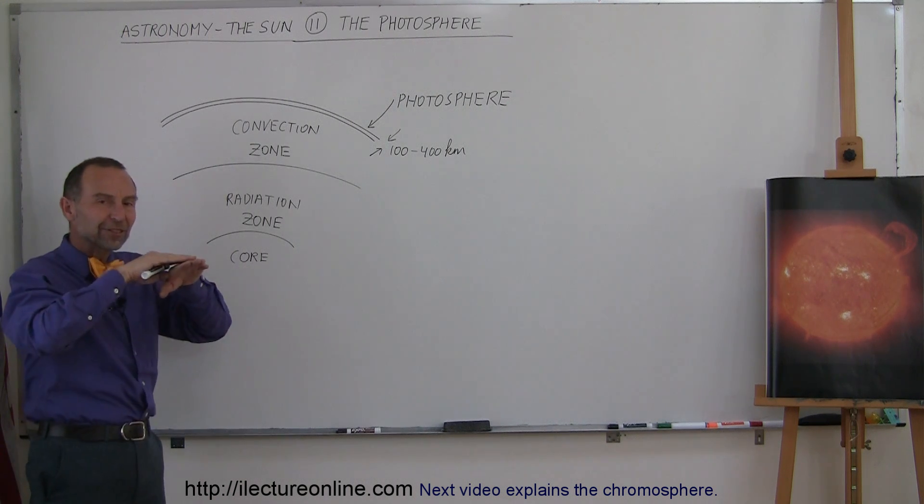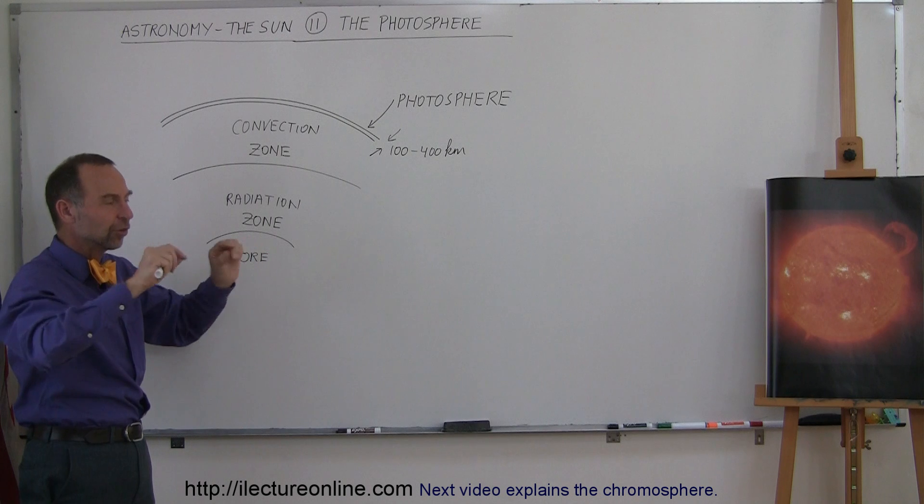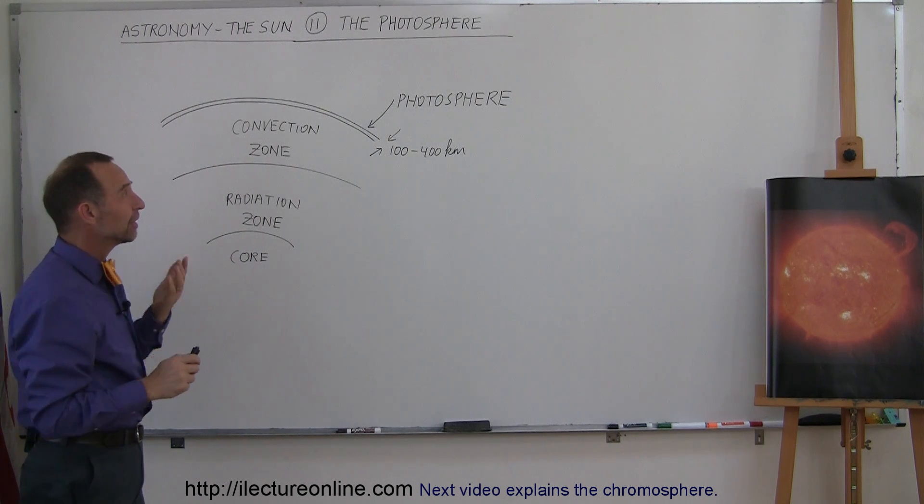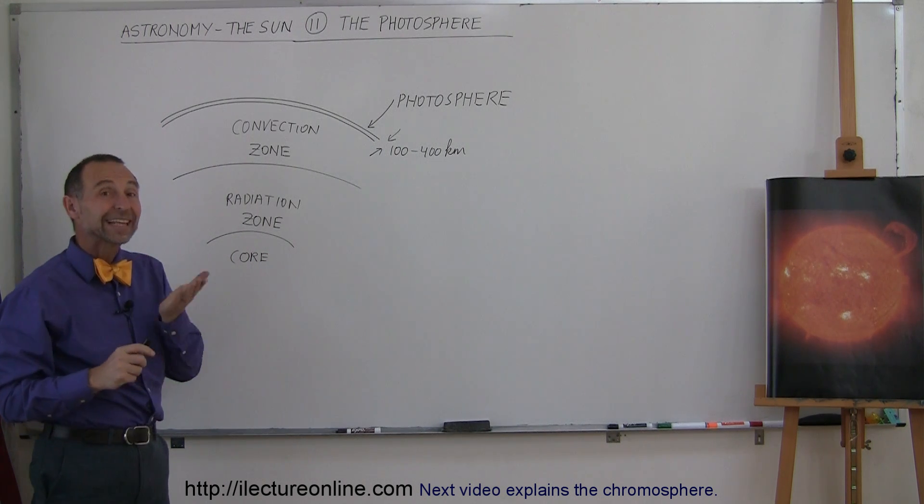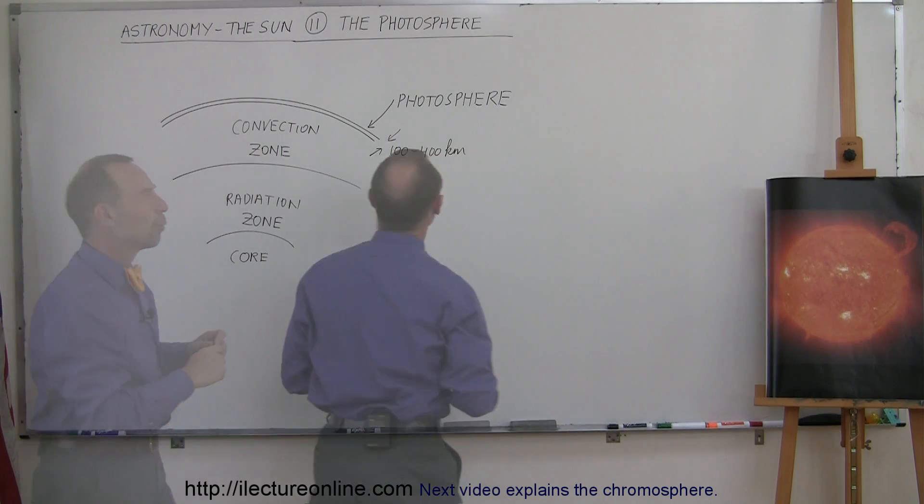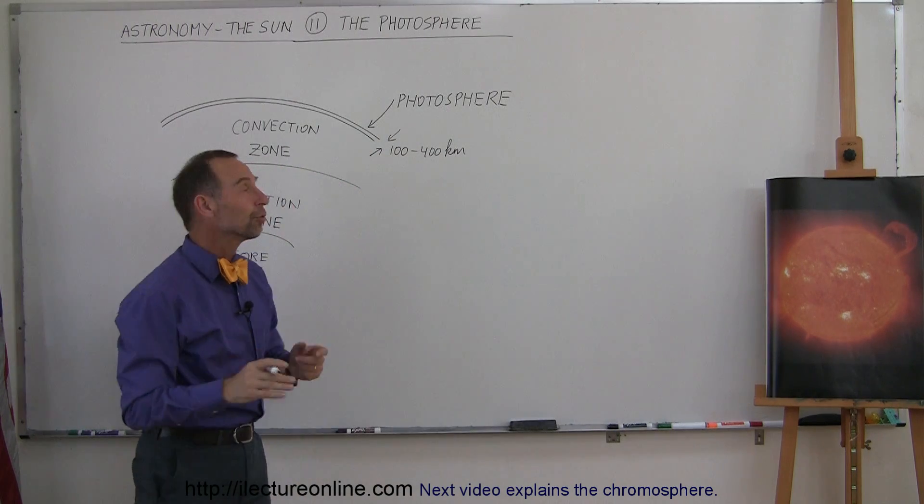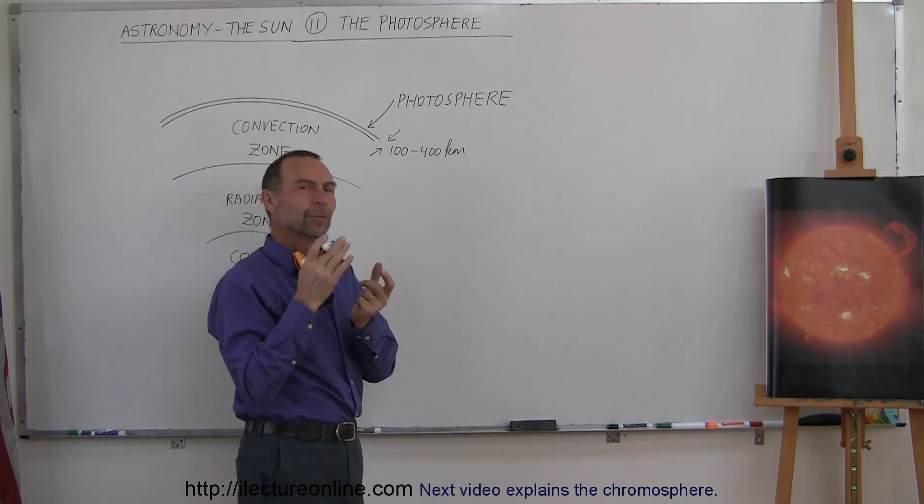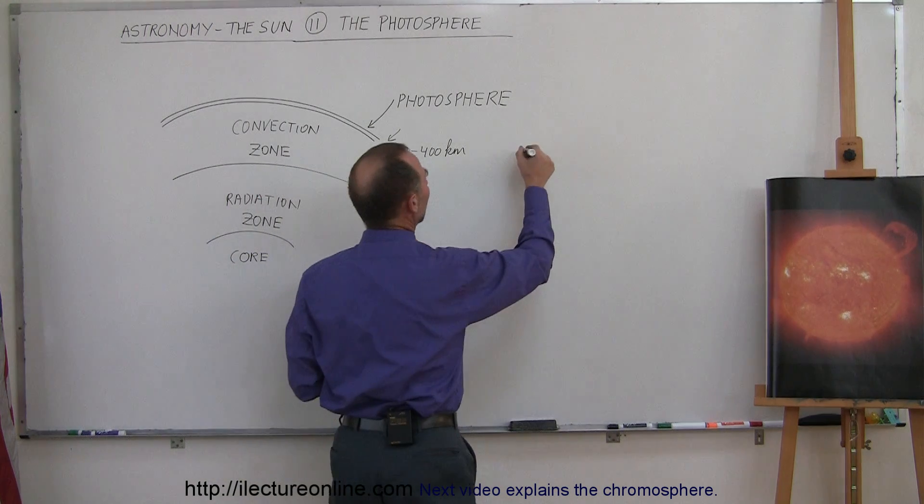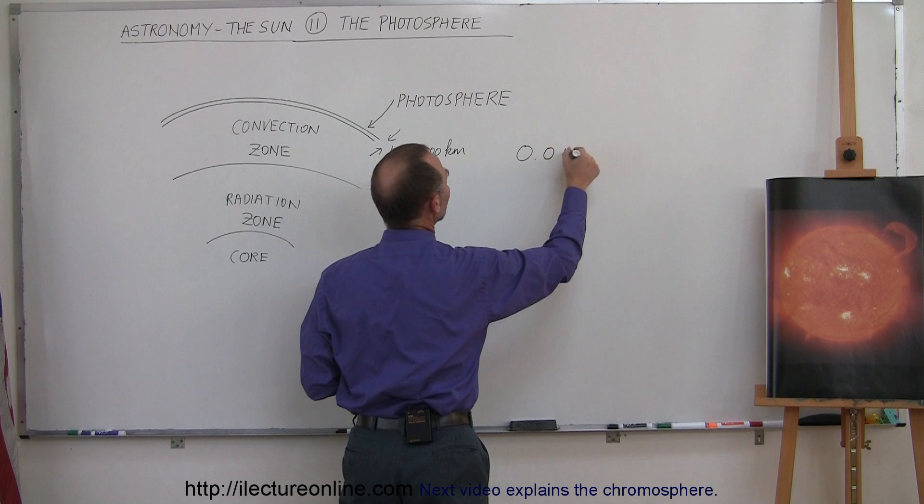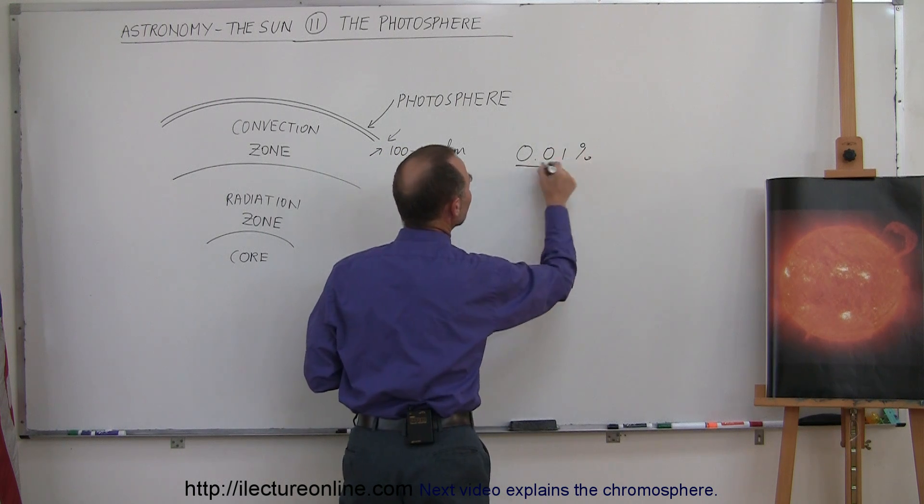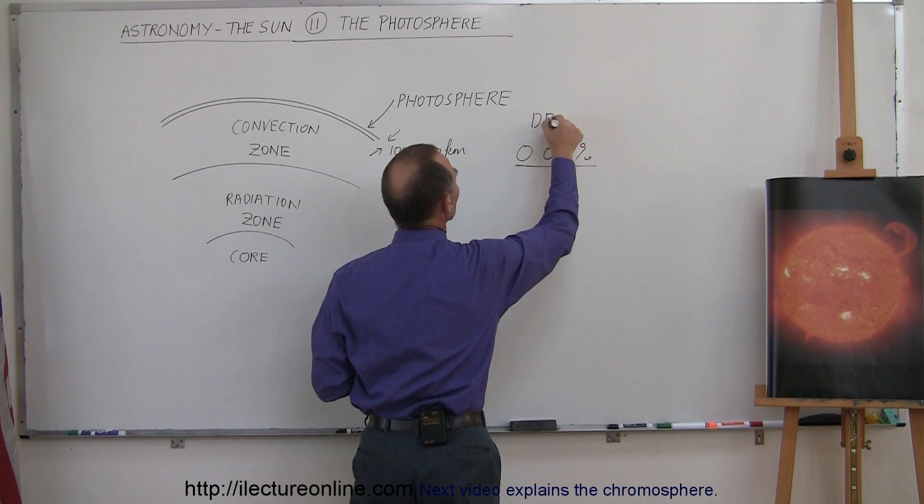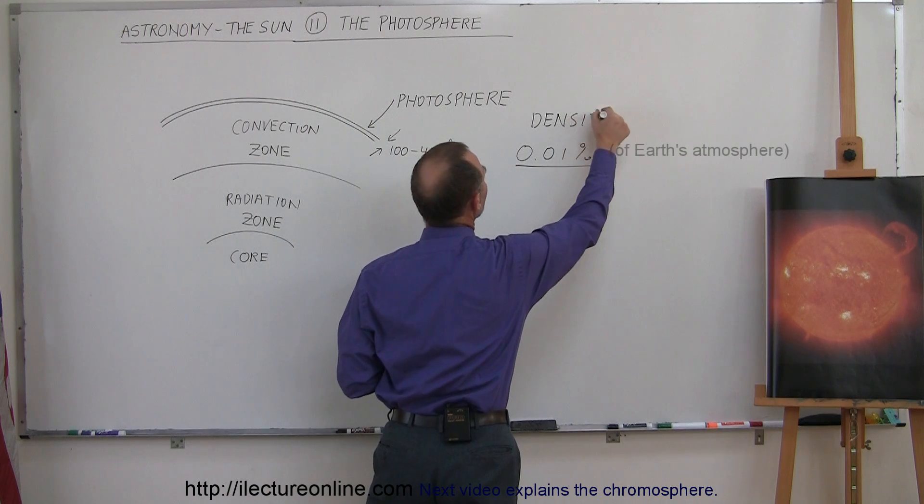Now the photosphere, even though it's still the physical limit of the Sun, the physical surface of the Sun, the density of the photosphere is much less dense than Earth's atmosphere. The density of the photosphere is very tenuous. Compared to the Earth's atmosphere, it's about 0.01% the density of the Earth's atmosphere. So you can imagine it's not very dense.